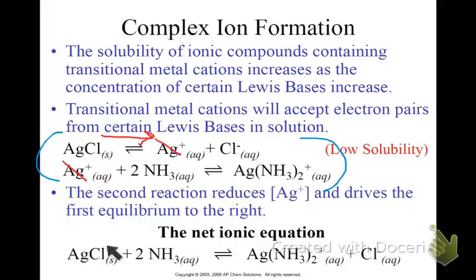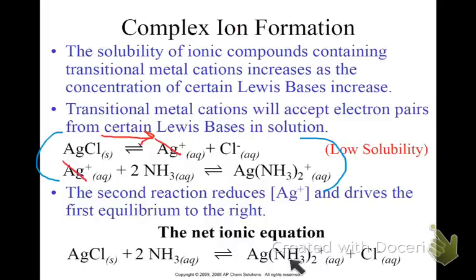So the overall net ionic equation: the silver is created and used up again as it drives the reaction over, giving AgCl plus ammonia yielding this ammonia complex and the chloride ions.